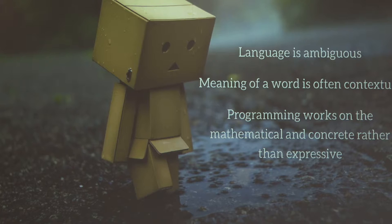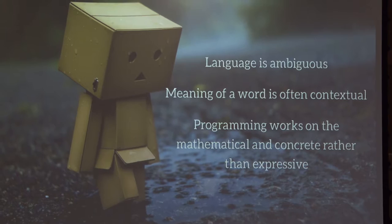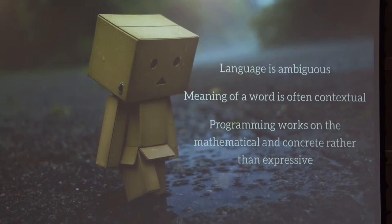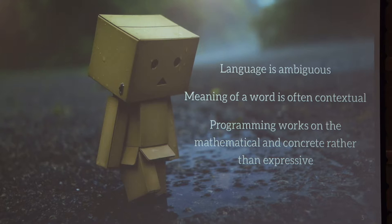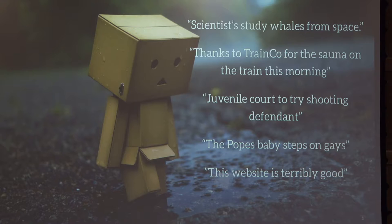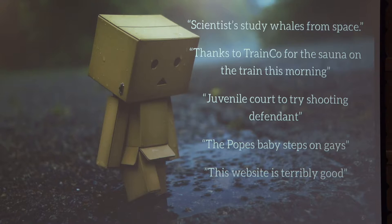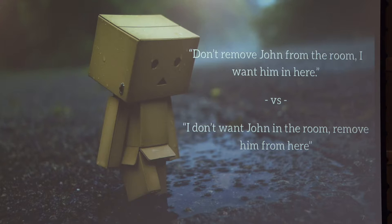Ultimately this comes down to the fact that computers work really well with mathematically concrete rules, but language is ambiguous. I can show real headlines to an audience like you and you can parse them — based on context you know the pope isn't stepping on gay people, and a court isn't going to shoot a defendant. If we're counting words using a computer, we lose that context. Similarly, the same words can appear in two sentences with opposite meanings, so word order is also of key importance.